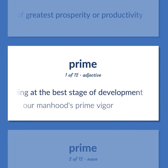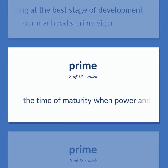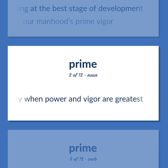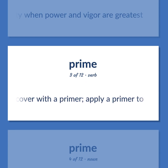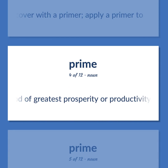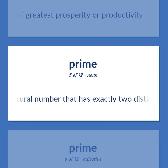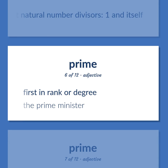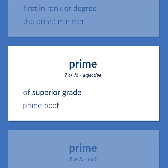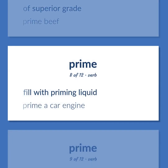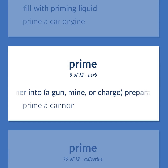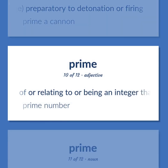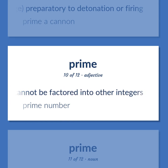Prime: Being at the best stage of development — our manhood's prime vigor. The time of maturity when power and vigor are greatest; cover with a primer; apply a primer to. The period of greatest prosperity or productivity. A natural number that has exactly two distinct natural number divisors, one and itself. First in rank or degree — the prime minister. Of superior grade — prime beef. Fill with priming liquid — prime a car engine. Insert a primer into a gun, mine, or charge preparatory to detonation or firing — prime a cannon. Of or relating to an integer that cannot be factored into other integers — prime number. The second canonical hour, about 6 a.m. Used of the first or originating agent — prime mover.